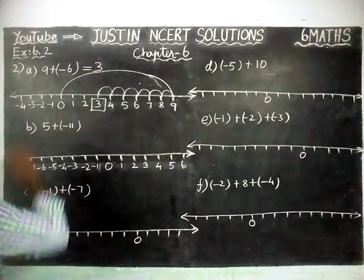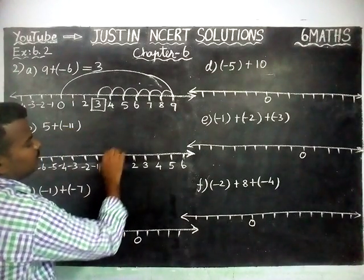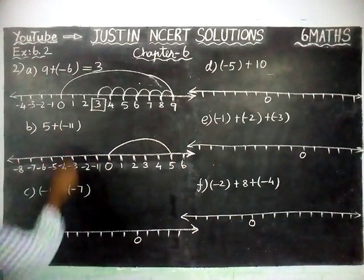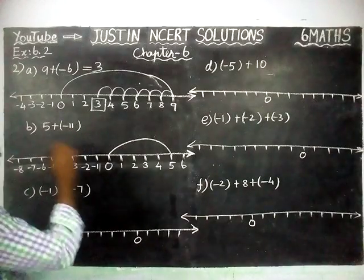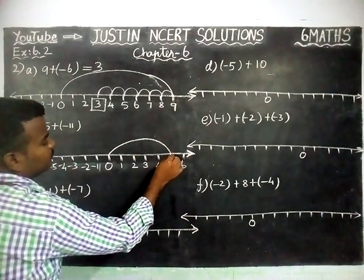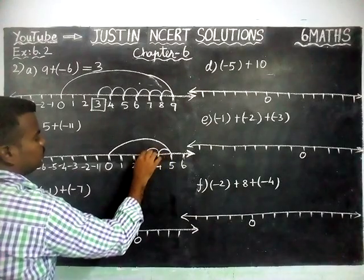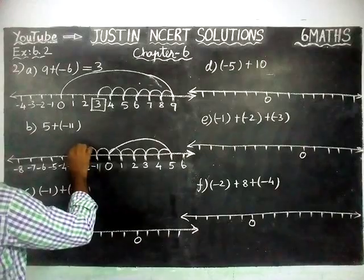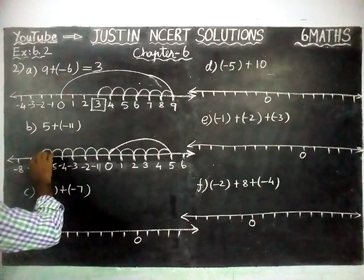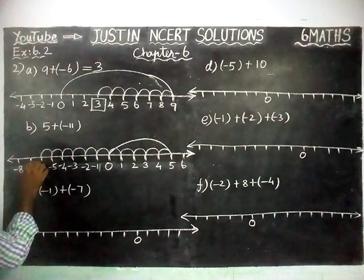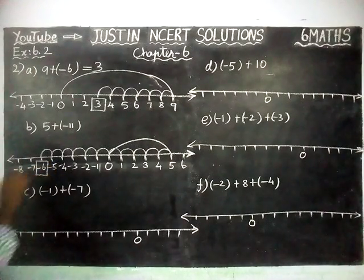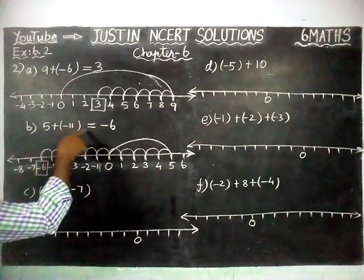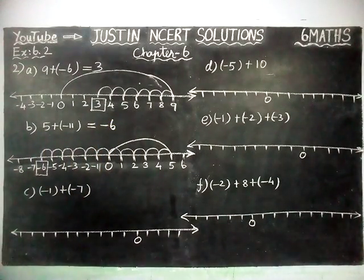For 5 plus minus 11: from 0, first we move to 5. Then minus 11 is there, so we have to move left-hand side 11 steps: 1, 2, 3, 4, 5, 6, 7, 8, 9, 10, 11. In the 11th step, we reached the number minus 6. So the correct answer is minus 6. 5 plus minus 11 is equal to minus 6.